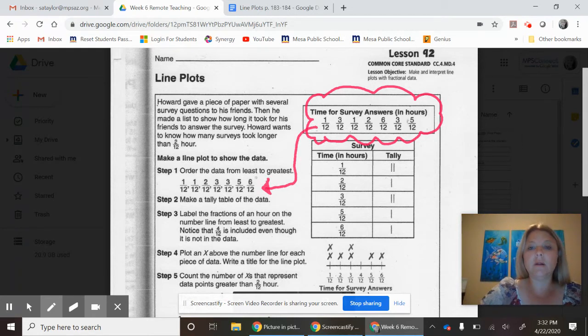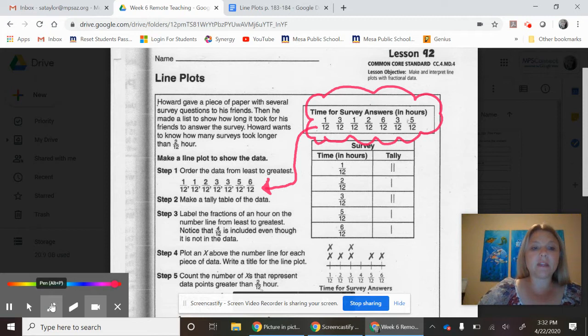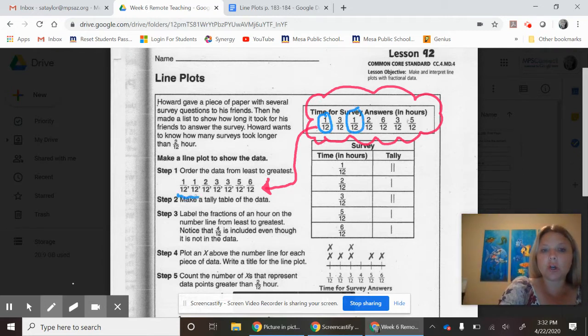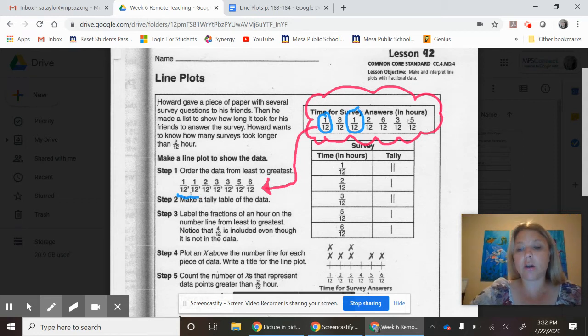You take all of this information, and Step 1, you need to put all of this information in order from least to greatest. You put the smallest fraction first. Now, if you notice on this piece of paper, a couple of these have been listed more than once. I can circle like the one twelfth and the one twelfth - it's been listed twice.